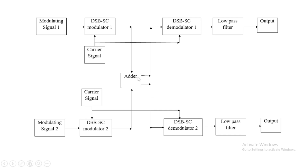The same is done for modulating signal two. After that, an adder combines both modulating signals and passes them over the channel. At the output of the adder, we use a DSB-SC demodulator to demodulate the signal sent from the input side. Two demodulators are used, and then low pass filters are used to smooth or remove noise from the demodulator output. Two low pass filters are used — one at each demodulator side.